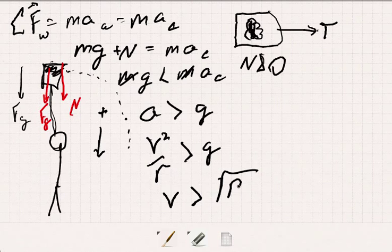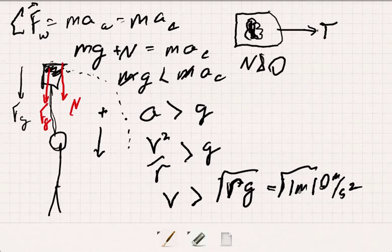And so we could estimate that. How about if this is a 1 meter string, this is equal to square root of 1 meter times 10 meters per second squared. And let's see, we got meters squared per second squared. We like it because the square root gives us meters per second. And the number, 10, well, 10 is a little more than 9, is 3 squared. So this is a little bit more than 3, 3 meters per second.